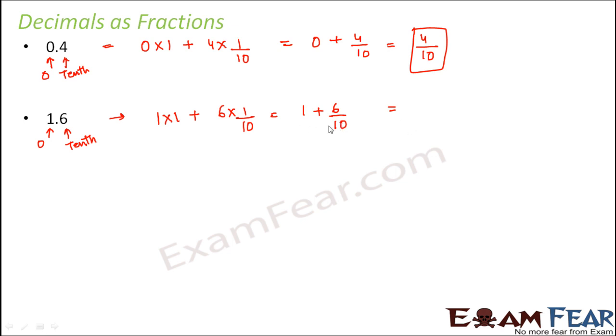You take the LCM of the two denominators, which is 10. So this denominator 1 should be multiplied by 10 to get 10. Therefore the numerator should also be multiplied by 10. And on this side the denominator is already 10.